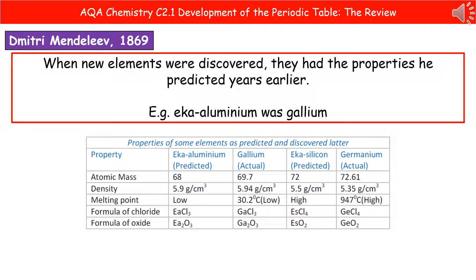The really impressive thing about Mendeleev's work is that when new elements were discovered, they actually had the properties he had predicted many years before they were known to exist. Where he had gaps, he said there will be an element that goes here with properties like this — and when they were discovered, he was pretty right. If you look at the table below, you can see he had his predicted eka-aluminium, and then gallium was discovered years later. You can see the similarities between his predicted properties and the actual properties when we found it.